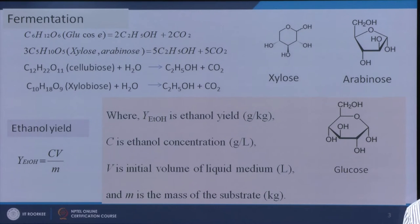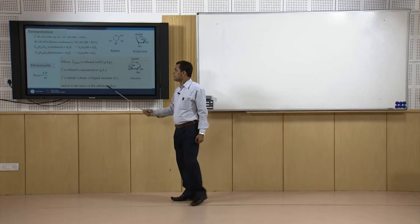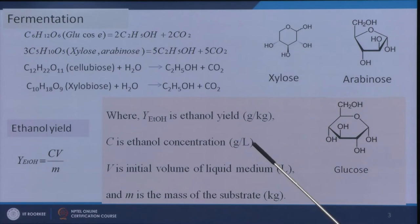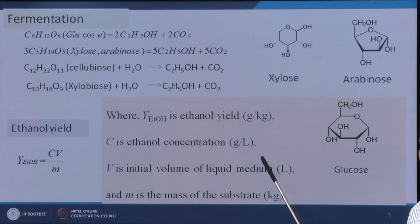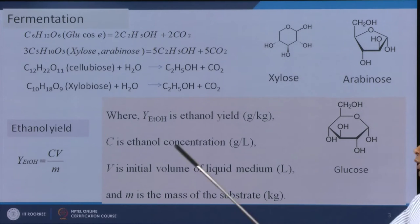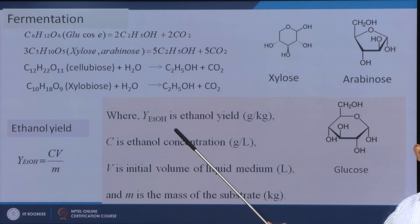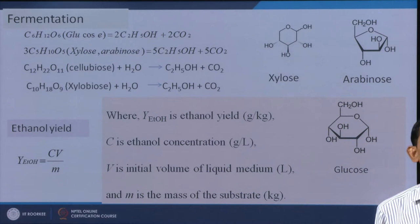How can we find out the ethanol yield? Ethanol yield is defined as Y_EtOH = C·V / M, where C is the ethanol concentration in grams per liter, V is the initial volume of liquid medium in liters, and M is the mass of the substrate in kilograms. This gives ethanol yield in grams per kilogram.